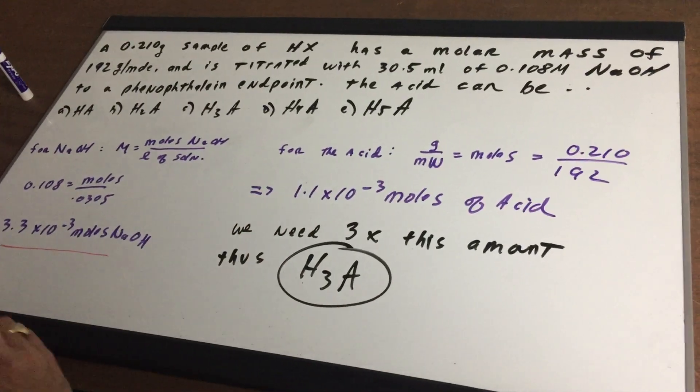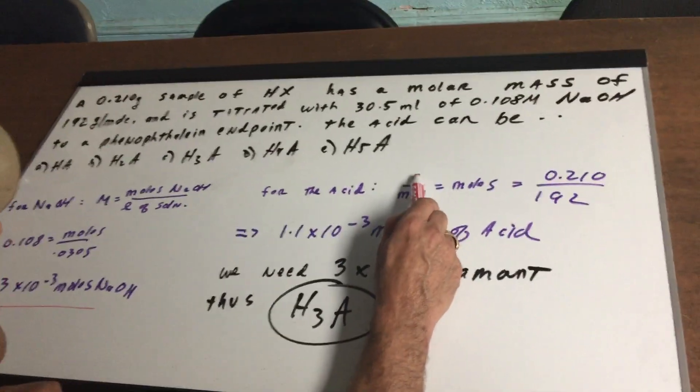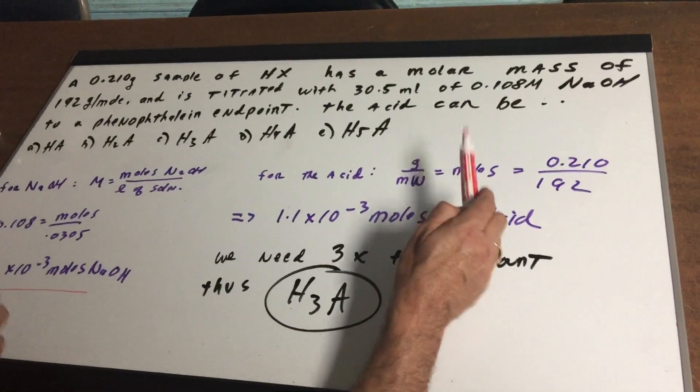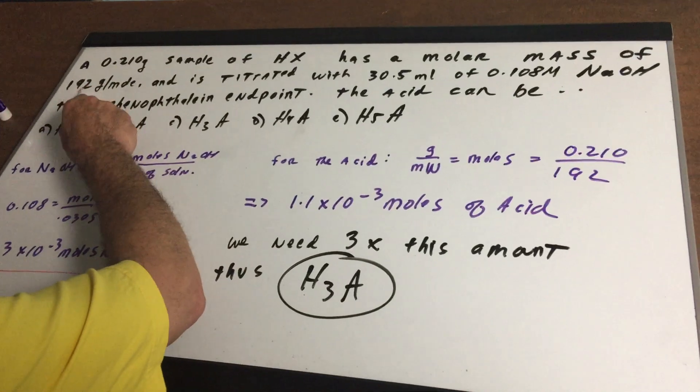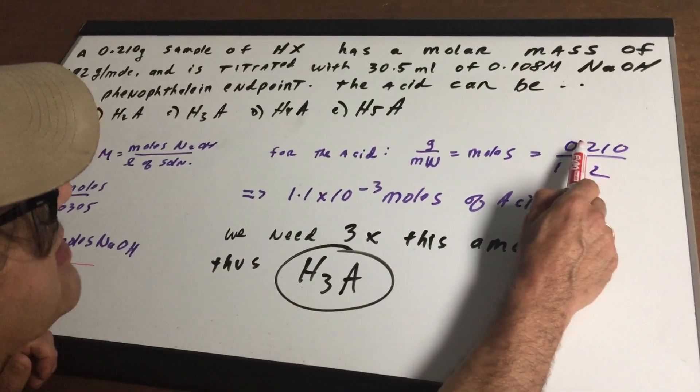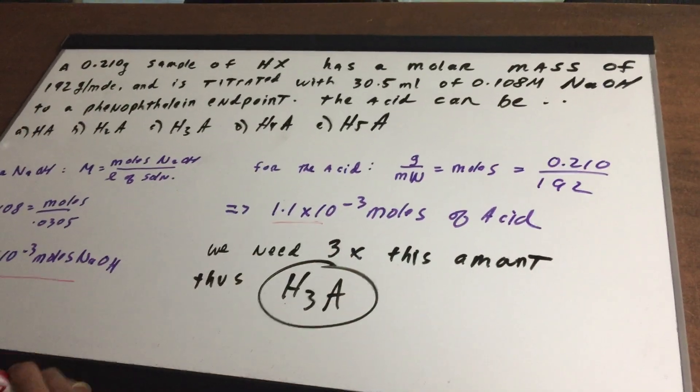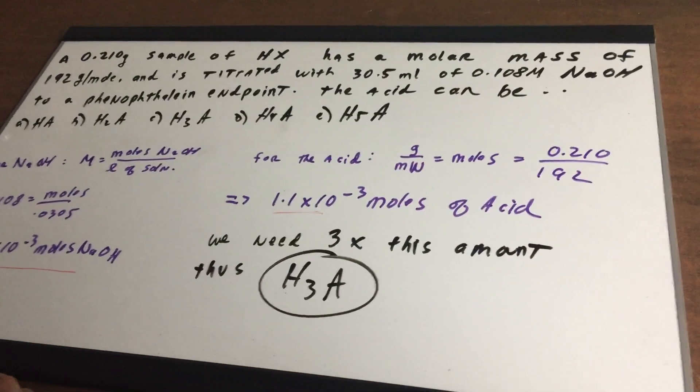Now for the acid. A nice little trick to get moles of acid is to simply say grams over the molecular weight is moles. We know the grams of acid and we know the molecular weight. So very simple, I can simply divide these out and we can see we have 1.1 times 10 to the minus 3 moles of acid.